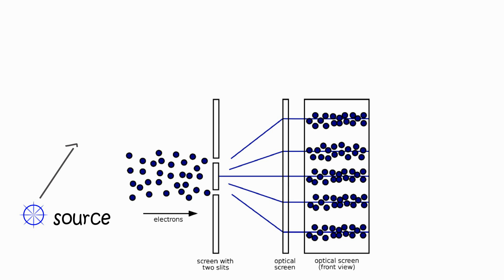At double slit, center of electron passes through either slit, while its extensions, where most of the momentum are, passes through both.